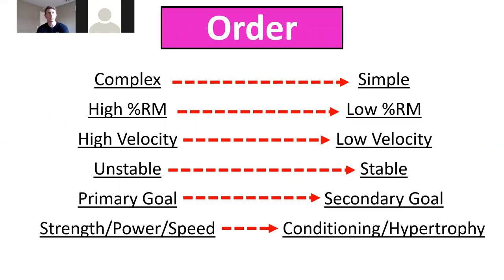Key rules for exercise order: complex to simple, high RM to low RM (high load to low load), high velocity to low velocity, unstable to stable, primary goal to secondary goal, and strength/power/speed before conditioning and hypertrophy. The best practice ordering is: skill first, then speed, power, strength, hypertrophy, and conditioning.